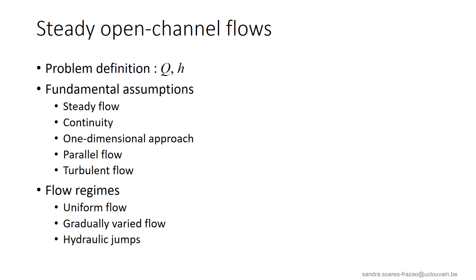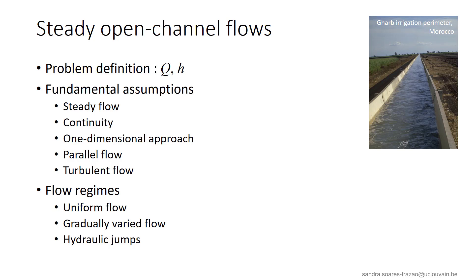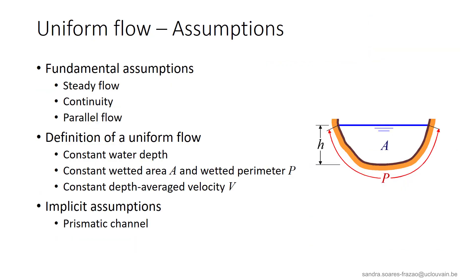So, the fundamental assumptions are summarized here, and with these, we will be able to describe and calculate different types of flows. If all the flow variables are constant, we will have a uniform flow. If some flow variables vary in a continuous and progressive way, we will have a gradually varied flow. And finally, hydraulic jumps induce sharp transitions in the flow variables.